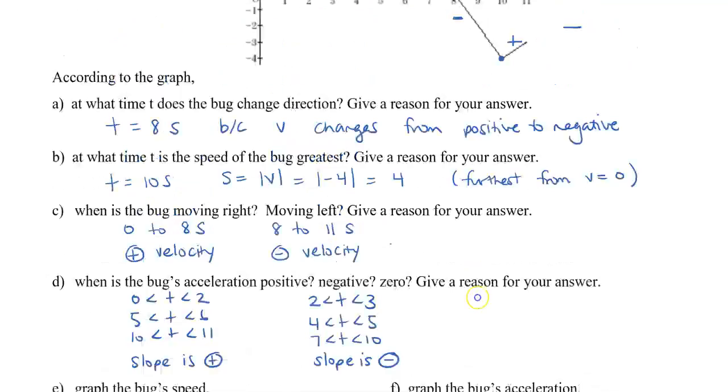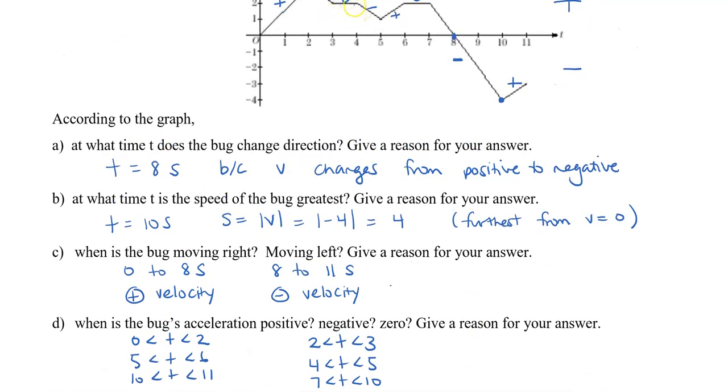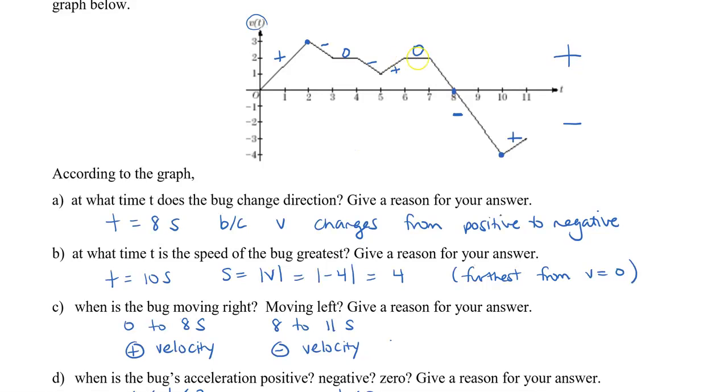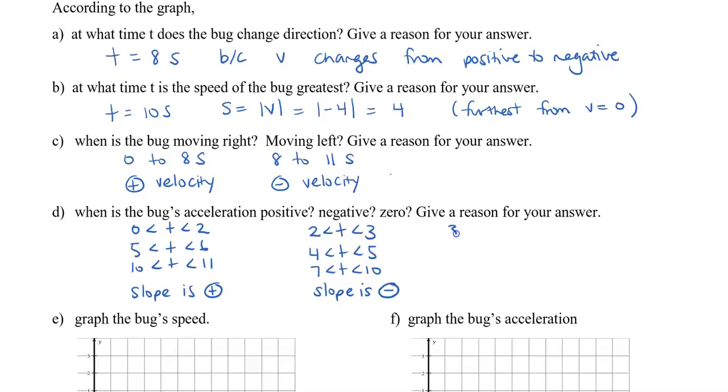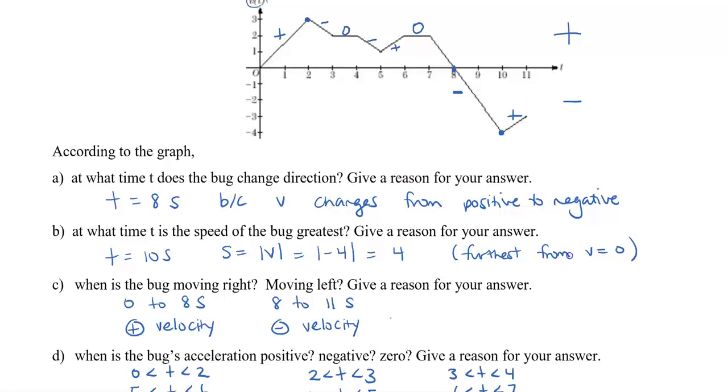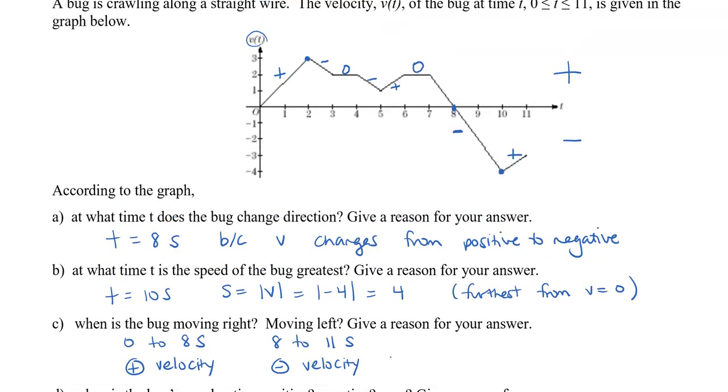And then, finally, it is 0 from 3 to 4, and then 6 to 7. And here, the slope is 0. Our last two things that I would like to do is to transcribe this graph into a speed graph, and then also an acceleration.